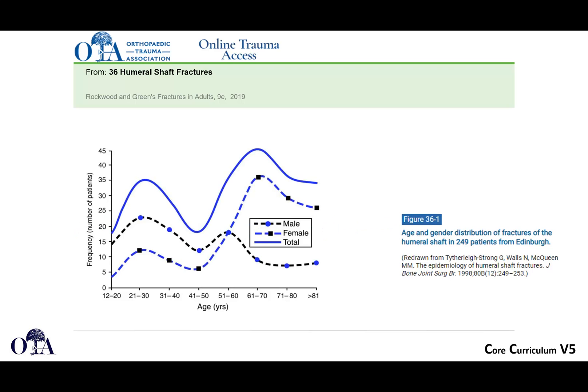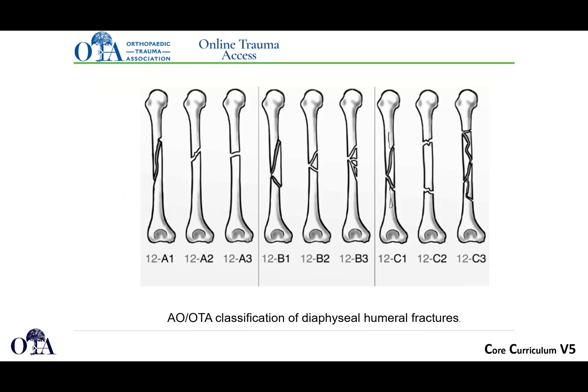A little bit about epidemiology and classification. Like many fractures, there's a bimodal distribution as shown in this figure, with younger trauma patients and then somewhat older osteoporotic fractures. With the AO/OTA classification, the humeral shaft is bone number one, region number two, so it's a 12 — 12A, B, and C — like most diaphyseal fractures, as shown in the diagram.